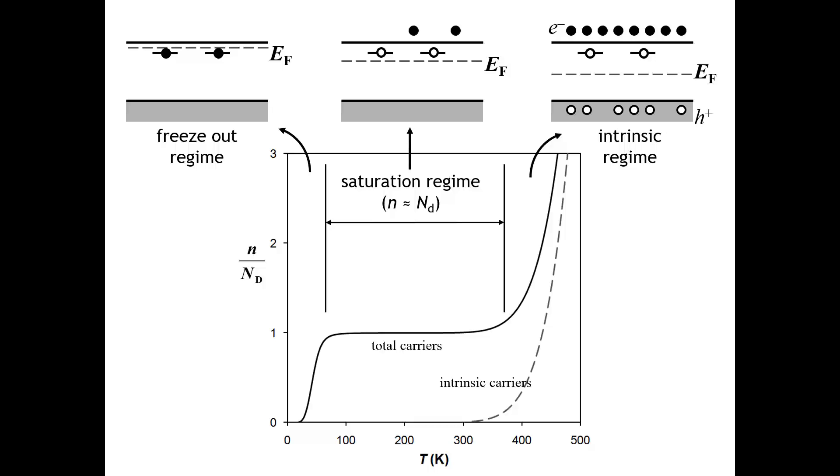But in a doped semiconductor, at very low temperatures, we don't have enough thermal energy to even excite the electrons off of the donor dopants, away from the phosphorus. And so you have something called the freeze-out regime, where the conductivity is quite low. And then at, depending on the dopant and the semiconductor, but at relatively modest temperatures, here, well below room temperature, we get what's called the saturation regime.